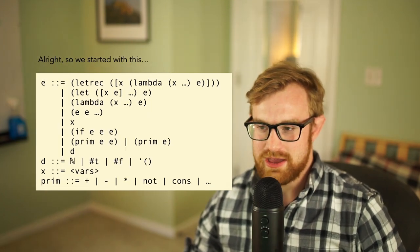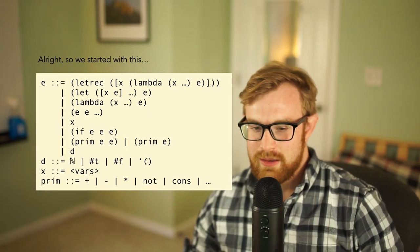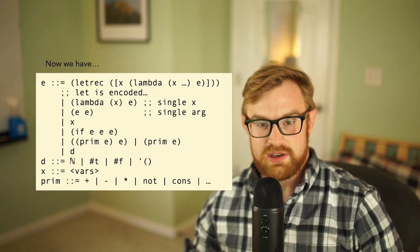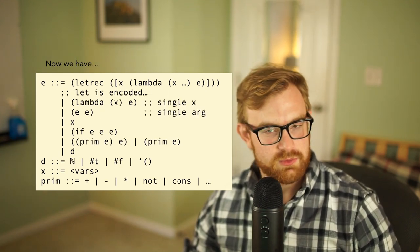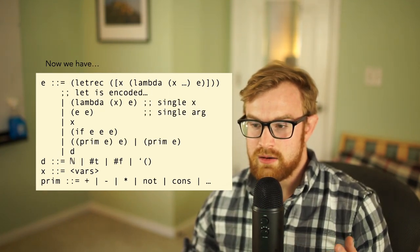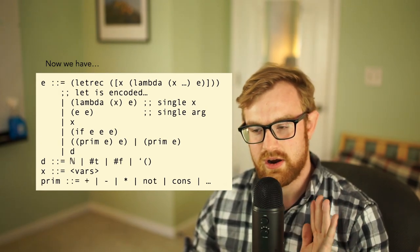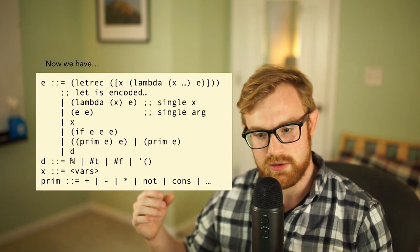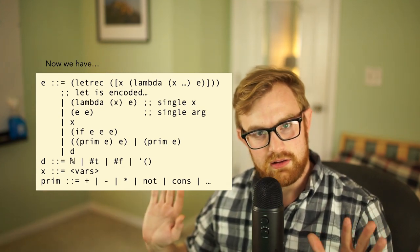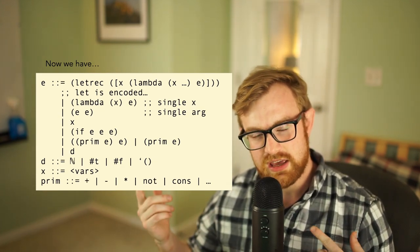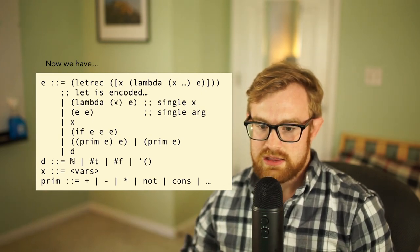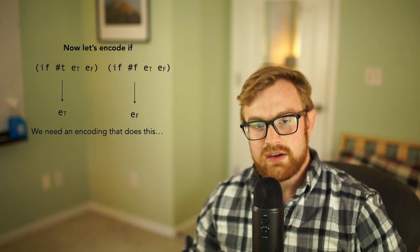All right, so we started with this language right here, pretty large language, but we're all the way down to this already. So let has been encoded, don't have to deal with let. Now we just have single arguments for our lambdas, we also have single arguments for our applications. Where we had multiple arguments before, we're taking care of all of that with our transformation for let and for currying. All right, and so now we need to talk about how do we encode if and also how do we encode booleans.